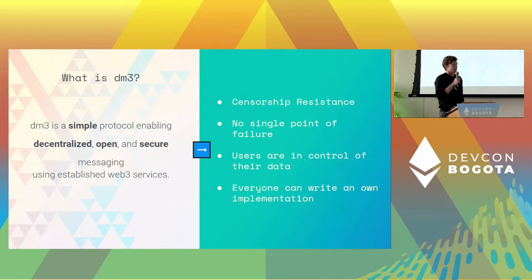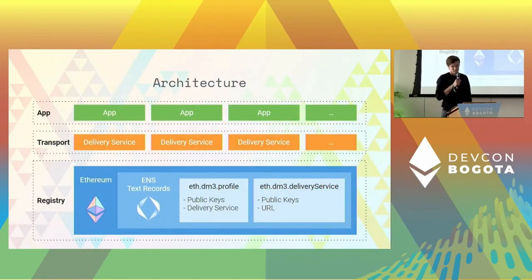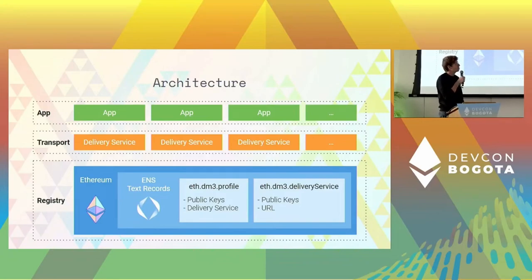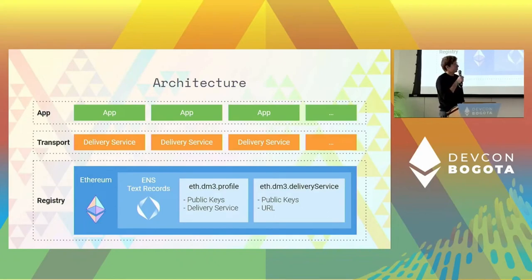Everyone can write their own implementation of DiEM3. The basis for DiEM3 is a registry where users can store their profiles. We used ENS text records for that, and on the middle layer we have the delivery service. Delivery services buffer the messages until they are delivered to the messaging app. On top, you can see the messaging app.